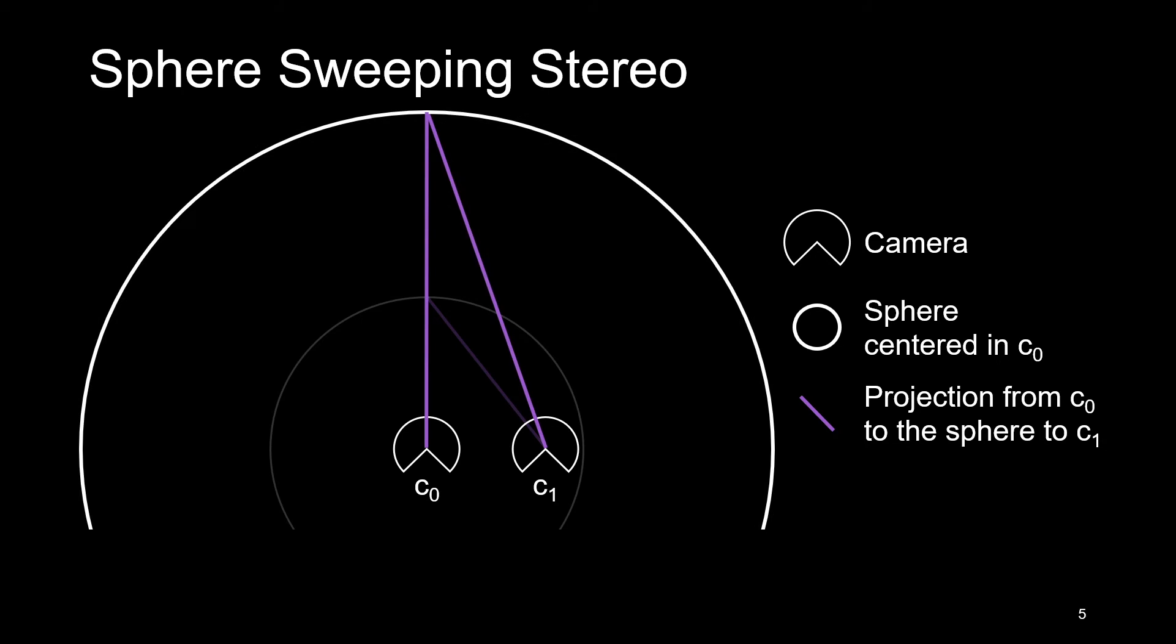The sphere sweeping volume corresponds to the image captured by camera 1 and warped to reference 0, following the sampling locations from different distance candidates. The color of the volume at the correct distance should be similar to the color in camera 0. Note that, unlike plane sweeping stereo, the volume is not built using homographies.